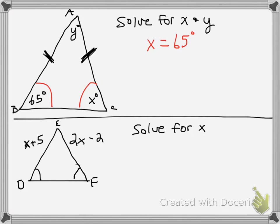So I'm going to add 65 and 65 to give me 130. 180 minus 130 gives me 50. So y is 50 degrees.